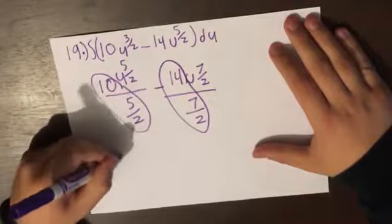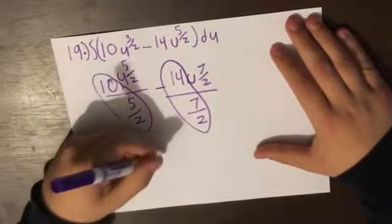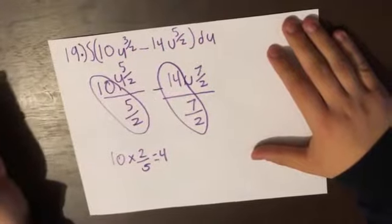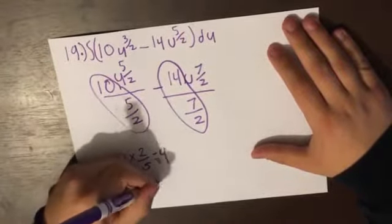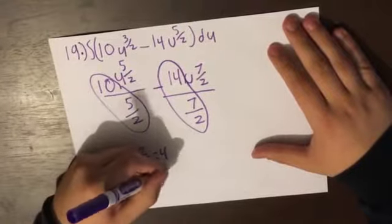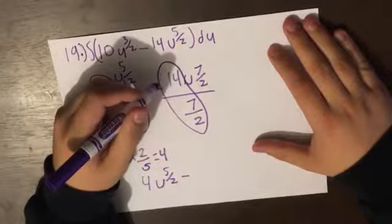So it's going to be 10 times 2/5, which is going to equal 4. I'm just going to make it easy for you. You can just plug that into your calculator. So it's going to be 4u^(5/2), minus 2/7.